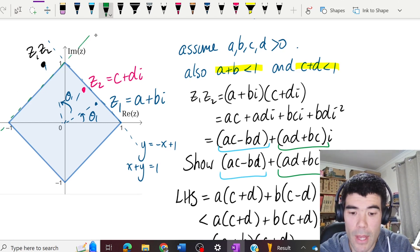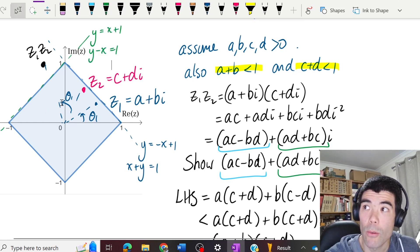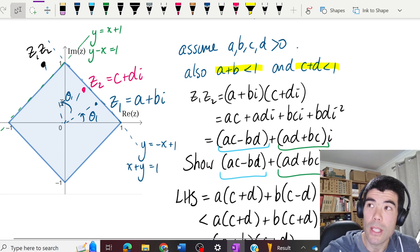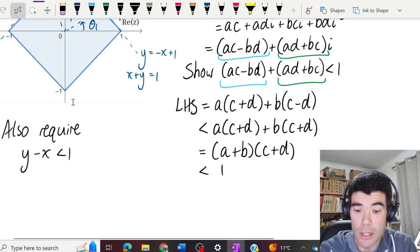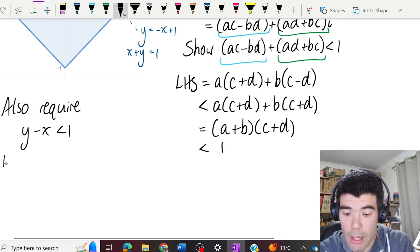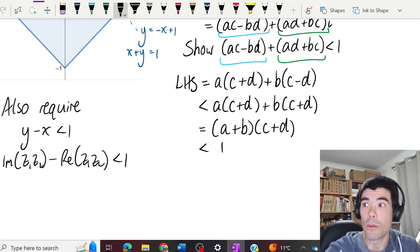Now this line has the equation y equals x plus one. I can rewrite that as y minus x equal to one. If I want to be below that line, then I'll need to have y minus x to be less than one. So I need y minus x to be less than one, or the imaginary part of our product minus the real part to be less than one.